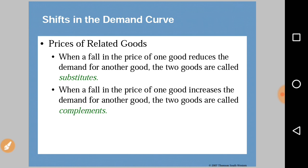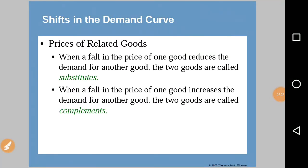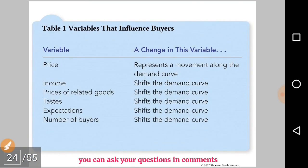When a fall in the price of one good reduces the demand for another good, the two goods are called substitutes. For example, if the price of Coca-Cola rises, people will switch to Pepsi; if the price of Coca-Cola falls, demand for Pepsi will reduce. When a fall in the price of one good increases the demand for another, those goods are complements. For instance, if cars become cheaper, the demand for petrol will rise because they are complementary goods.